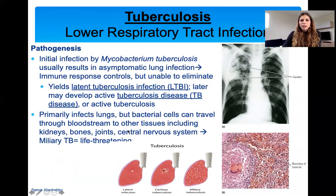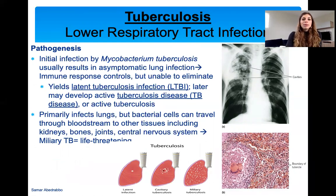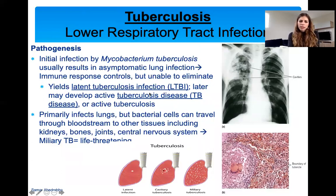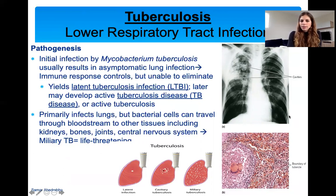Initial infection by Mycobacterium tuberculosis results in asymptomatic lung infection to begin with, because the immune system usually controls it but cannot eliminate all the bacteria. So you get a latent TB infection, which can at any point — or maybe never — turn into active tuberculosis. Active tuberculosis is when the bacteria spread, which is called miliary tuberculosis, and this is life-threatening.